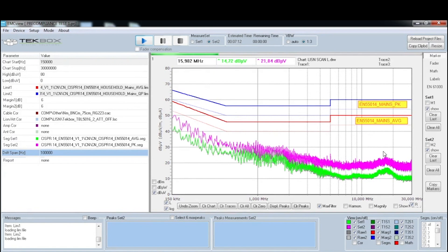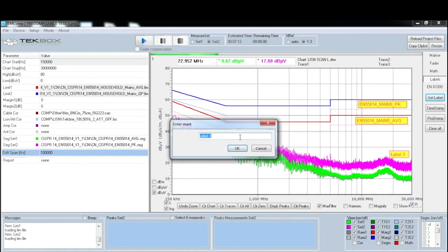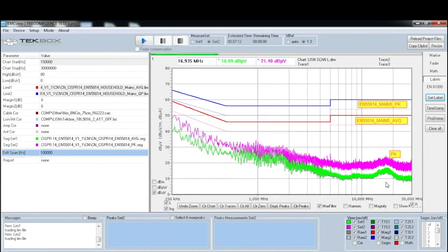You just need to go to labels and then set label. Then here, there's a new label that you can drag easily. And then right click and then you can edit. So basically here, we know the purple line is peak value. So I can just say PK. And then you can do the same for the average.